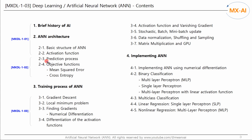In the last video, we looked at the prediction process of a neural network and examined the objective function required for the training process. In this video, we will look at the gradient descent algorithm and how to find approximate gradients using numerical differentiation.